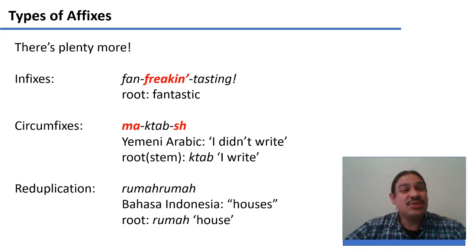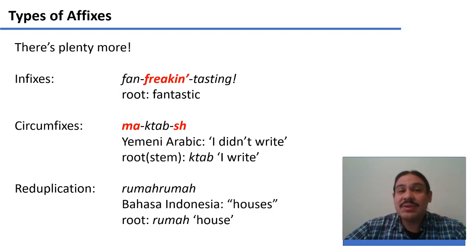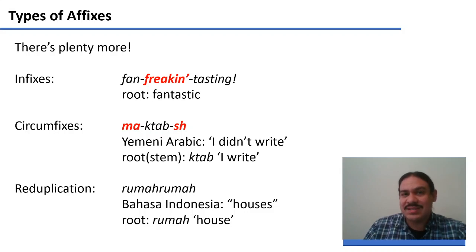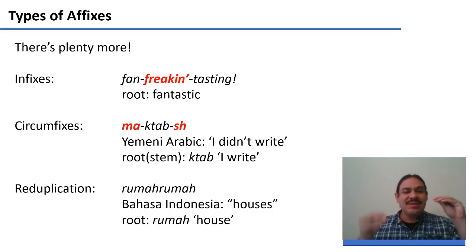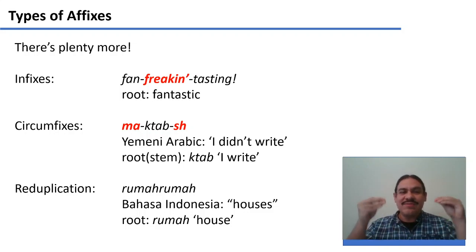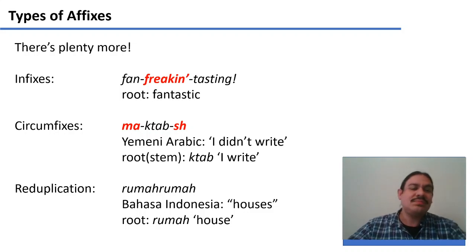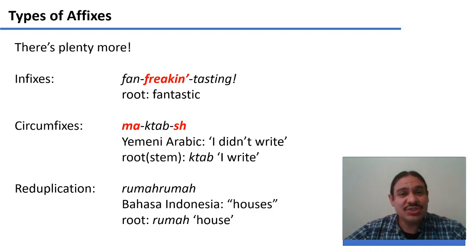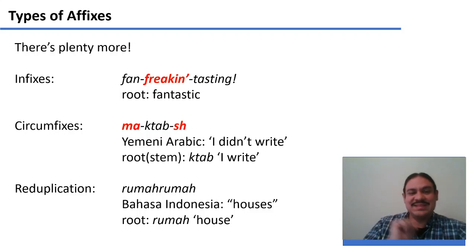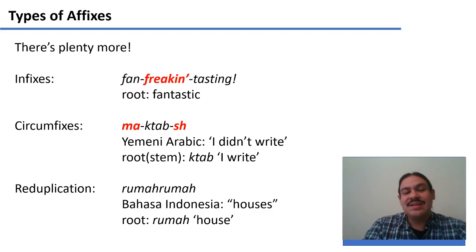There's something called a circumfix, which English doesn't have, but in Arabic when you want to negate a verb — like 'I didn't write' — you place 'ma-' before the root and another element after it, so the affix has two parts surrounding the root. In reduplication, you repeat the root twice: for example, 'rumah-rumah' in Bahasa Indonesia means 'houses' and comes from the root 'rumah,' meaning just one house.